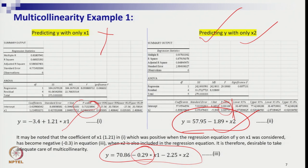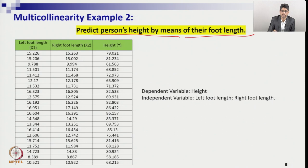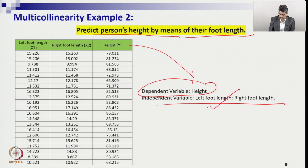Let us see one more practical example for better clarity. Here the objective is to predict a person's height using their foot length. We know that foot length — left or right — can give a tentative prediction of a person's height. So we considered height as the dependent variable and the independent variables are left foot length and right foot length. We then run the regression to see how these explain height.